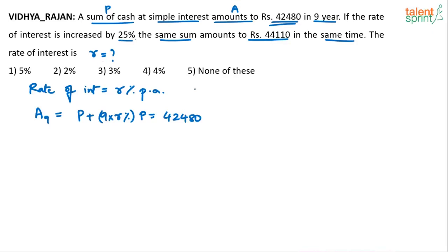Now, the rate of interest has increased. The new rate is R dash. How much is that? R dash is 1.25R. Why? It has increased by 25%. So when something increases by 25%, we can take it as 1.25 times the original value. So what is the amount now? The new amount A dash in 9 years - the period was same, on the same sum. So it will be equal to P plus 9 times of 1.25R percentage of P, which is equal to 44,110.